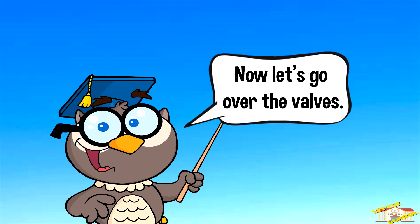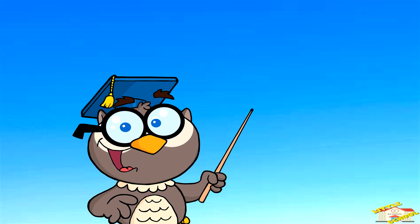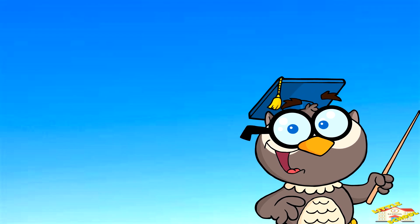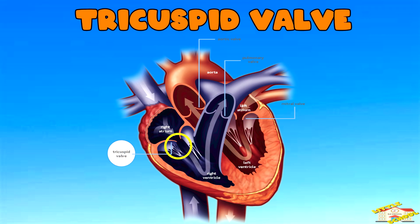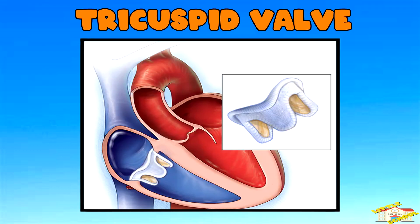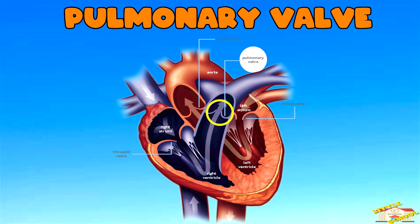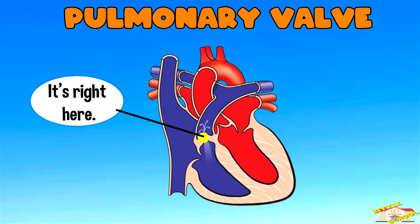Now let's go over the valves. Tricuspid valve: the tricuspid valve prevents blood from flowing back into the right atrium when the right ventricle contracts. Pulmonary valve: the pulmonary valve prevents blood from flowing back into the right ventricle from the pulmonary artery.